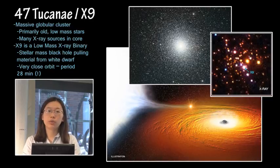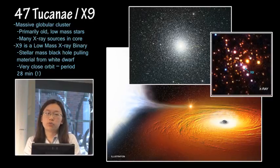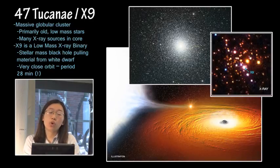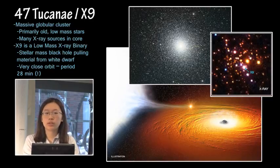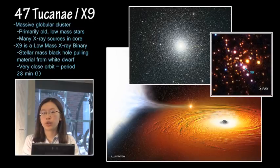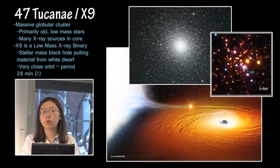Next we have 47 Tucanae, a globular cluster in the Milky Way, shown in the top image. It's primarily old and low-mass stars in a very tight concentration, and it contains many X-ray sources. One of these is called X9, a low-mass X-ray binary, meaning there is some kind of compact object — either a neutron star or a black hole — with something donating matter to it. It's theorized that the donor is a white dwarf in very close orbit, and that the X-rays come from white dwarf material being pulled into the stellar-mass black hole.